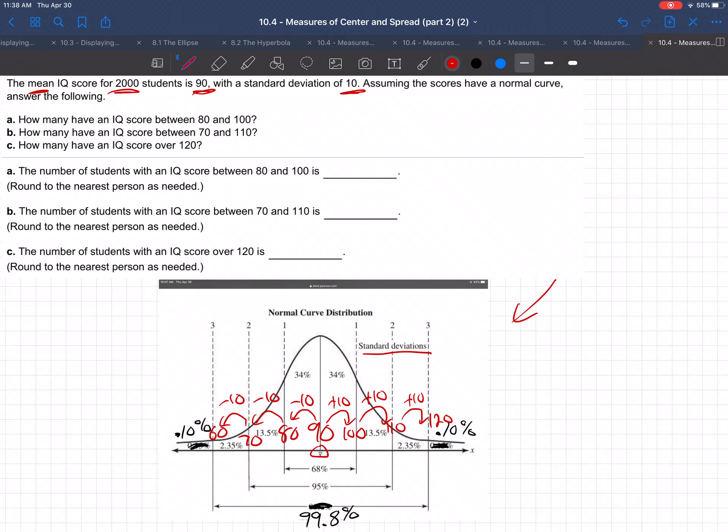Okay, so there is this. So this is true. If you have 2,000 students and the average, the mean IQ is 90, and the standard deviation is 10, then we can answer these questions.